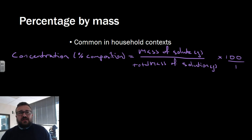For example, a lot of solutions, particularly the dangerous ones like bleaches or whatever, will usually have a percentage by mass as their calculation to show how strong they are. It's a really simple calculation, but there's a little trick in it.